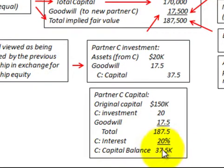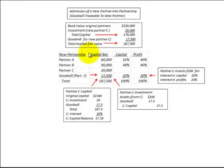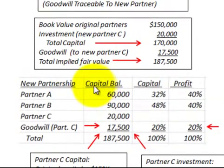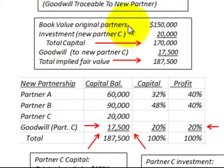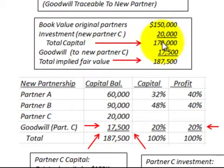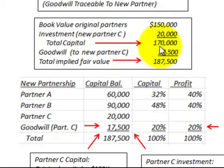Now let's look at how this affects the new partnership capital balances. We have partner A, partner B, and partner C in the new partnership. The book value for the original partners was $150,000, and the investment by new partner C was $20,000, so our total capital amount was $170,000. But using the goodwill method, we had to increase total capital up to $187,500, with that increase allocated to new partner C as goodwill traceable to their entry into the partnership.